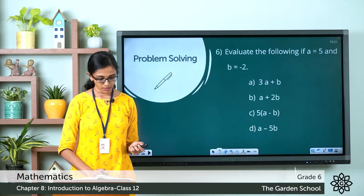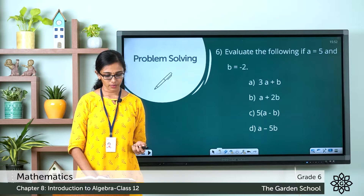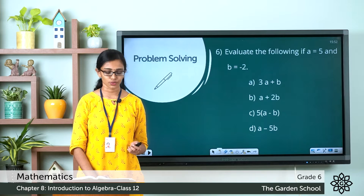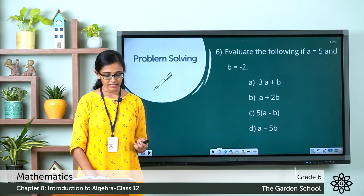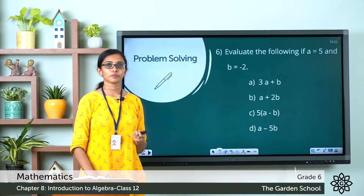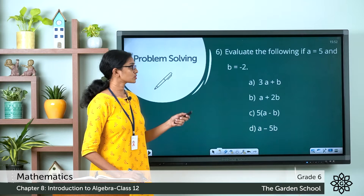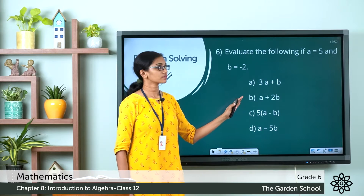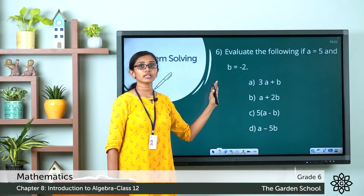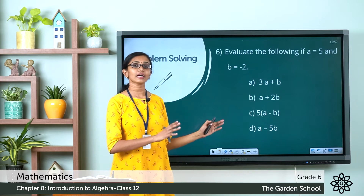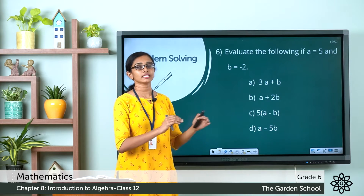Question 6 says: evaluate the following if a is equal to 5 and b is equal to minus 2. You are given a few algebraic expressions and you are supposed to substitute the values of the variables a and b in each of these expressions and evaluate each.